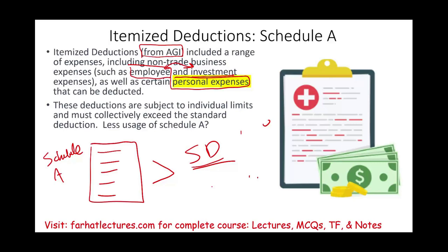There are fewer people using Schedule A for two reasons. First, certain deductions are suspended — specifically employee and investment expenses that are personal in nature between 2018 and 2025.